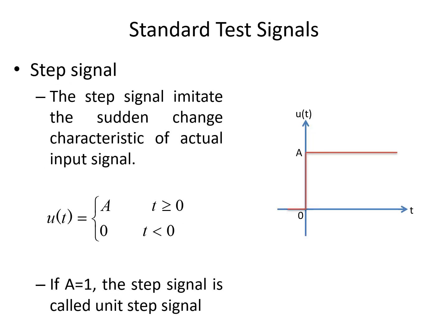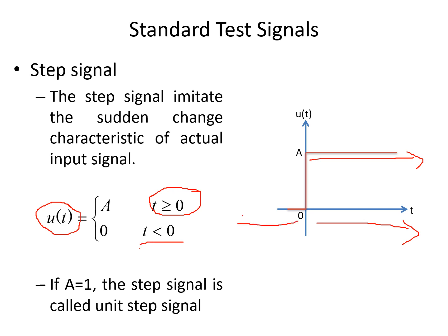Coming to the step signal: a step signal is usually represented as u(t). This is a standard signal which will have a constant amplitude towards the positive time axis. It takes a value equal to A for t greater than or equal to 0 — that means towards the positive time axis it has a constant amplitude — and it is considered as 0 for t less than 0. If this amplitude A is taken as equal to 1, then it is called the unit step signal, that is a signal with a magnitude of unity.